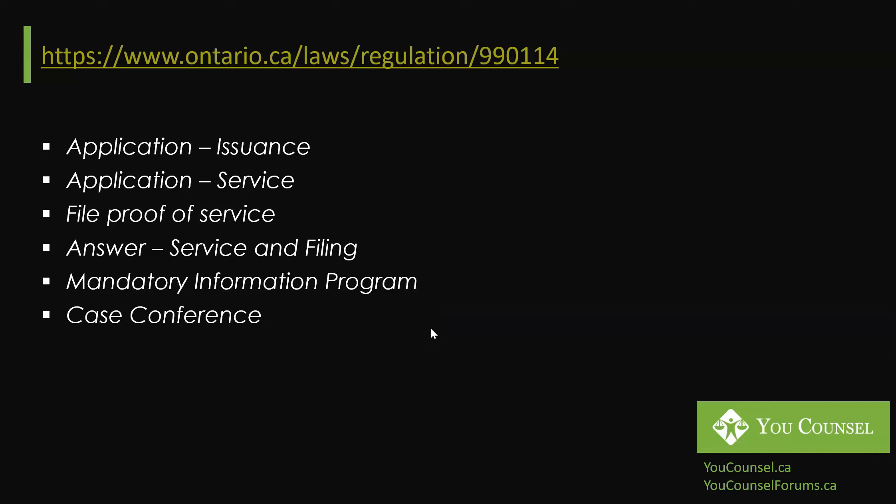Once that is done, the next stage in the process is the case conference. This is before the judge, and both parties will attend with or without counsel. The judge's role in the case conference is to figure out and understand what the issues are in that particular application — are there issues that could be narrowed down or resolved? It is to get an overall sense of what the case is and resolve any issues that could be addressed by way of discussion or some sort of order from the judge.